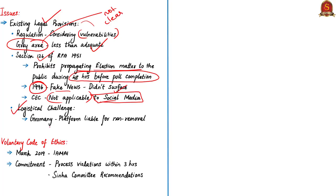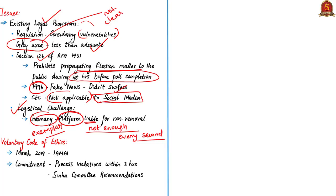Another issue is the logistical challenges associated with regulation. Hundreds of monitoring committees spread across the country may not be enough to identify and verify news that comes every single second on social media. Hence, India should consider taking Germany as an exemplar, where it is the responsibility of the social media platform to remove violating content when posted by individuals. The Bombay High Court recently asked social media platforms to follow the voluntary code of ethics for general elections 2019 of the Internet and Mobile Association of India, presented to the chief election commissioner in March 2019.